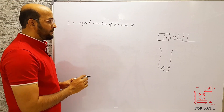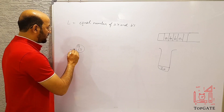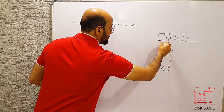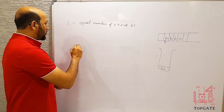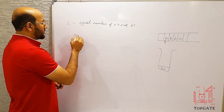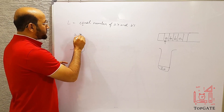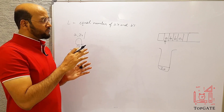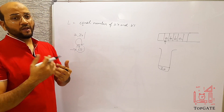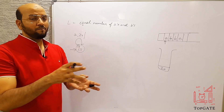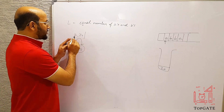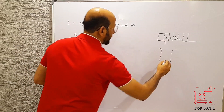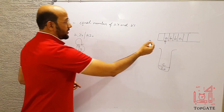We have Q0 as the initial state. The string can start with A or with B, so we take a self-loop for A. The transition is: input A, top stack element Z0, and we push A — so the transition is A, Z0 / A Z0. When A comes and the top stack element is Z0, A is pushed into the stack.